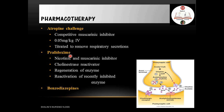The second drug of choice is pralidoxime, which is both a nicotinic and muscarinic inhibitor. Most importantly, it is a reactivator of the cholinesterase enzyme, especially recently inhibited enzyme, allowing regeneration of AChE. Benzodiazepines like diazepam can also be given to reduce patient anxiety.